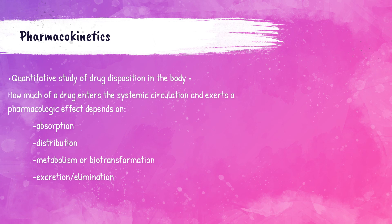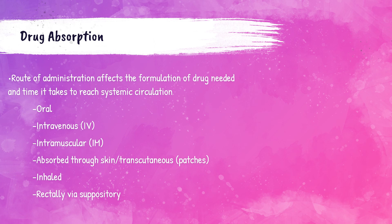Pharmacokinetics is the study of how drugs pass through the body. It includes how a drug is absorbed, distributed, metabolized, and excreted. We'll talk about each of these in the coming slides.